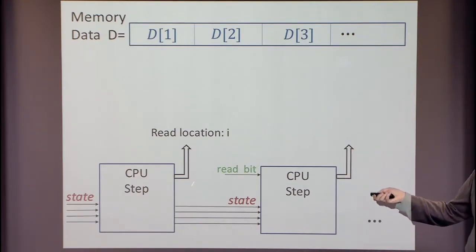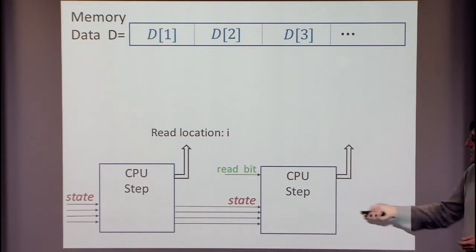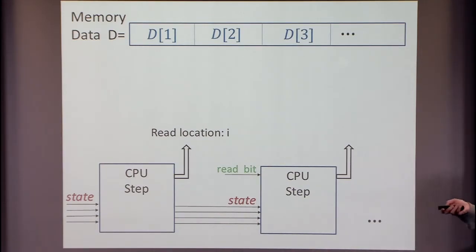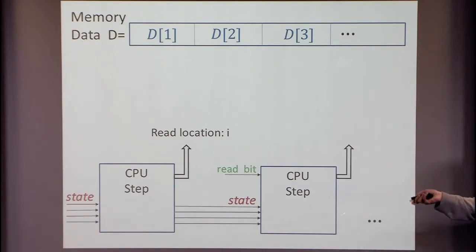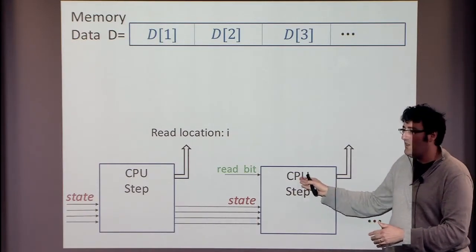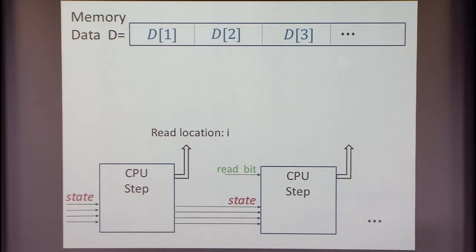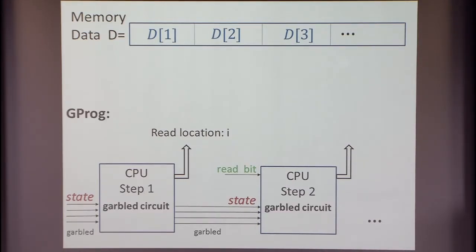I'm unrolling it, but there's really one CPU step circuit — these circuits are all the same. Think of the initial state as specifying some hard-coded values or small input to the program. In a real implementation, the actual code would be written in memory. How are we going to garble this? We're going to take each of these CPU step circuits and garble them one by one independently. Even though it's all the same circuit, we're going to garble it many times — as many times as the number of steps the computation takes. We're running in time proportional to the computation.